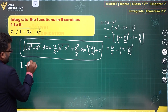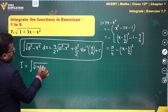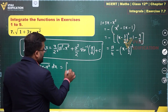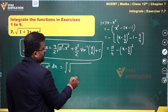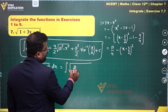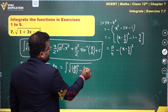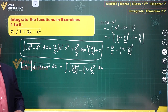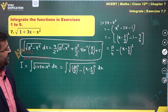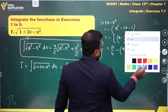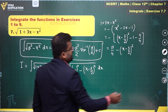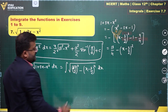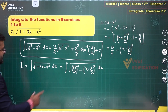Therefore the integral of √(1 + 3x - x²) dx equals the integral of √[(√13/2)² - (x - 3/2)²] dx. Here a = √13/2 and x is replaced by (x - 3/2). We can now directly apply the √(a² - x²) formula.